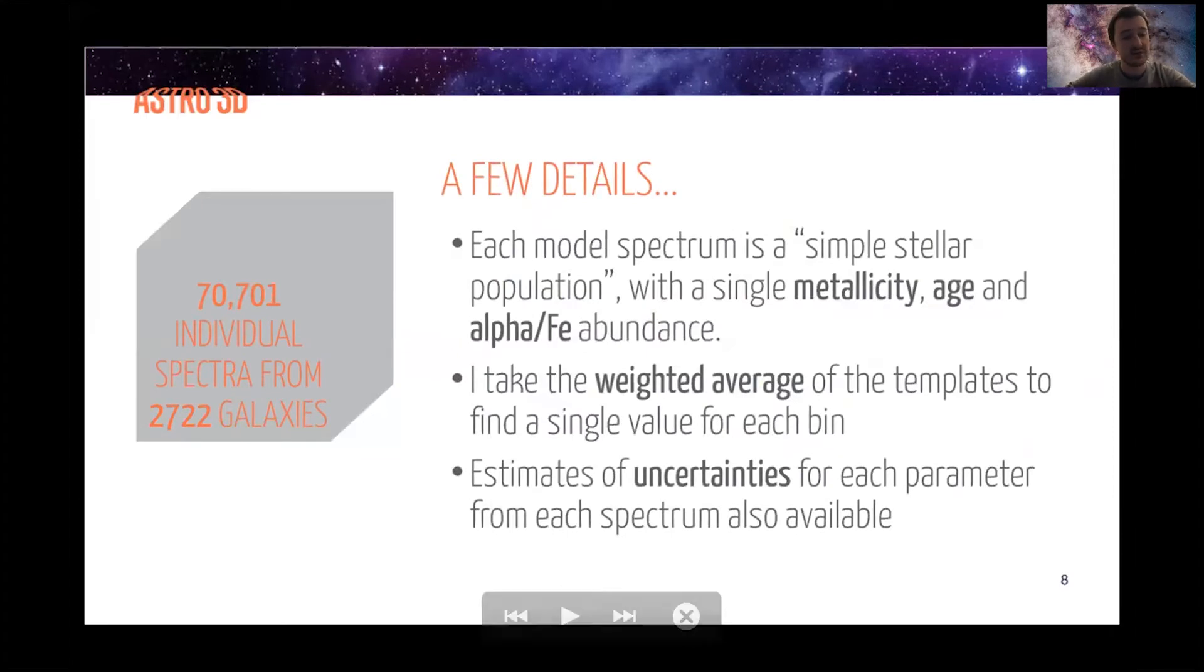So I've done this now for 2,700 galaxies in SAMI, which gives me 70,000 individual spectra from individual bins. About 800 or 900 of those galaxies don't really have enough signal to noise to make resolved measurements. So we just get one bin essentially. But I still have nearly 2,000 galaxies where I have at least three bins.